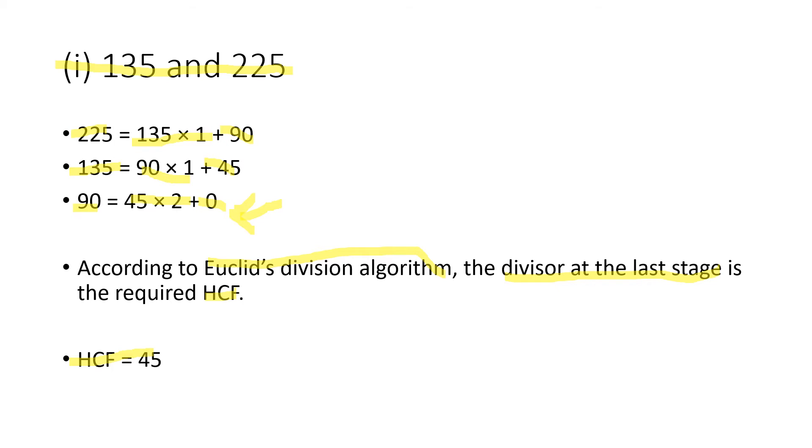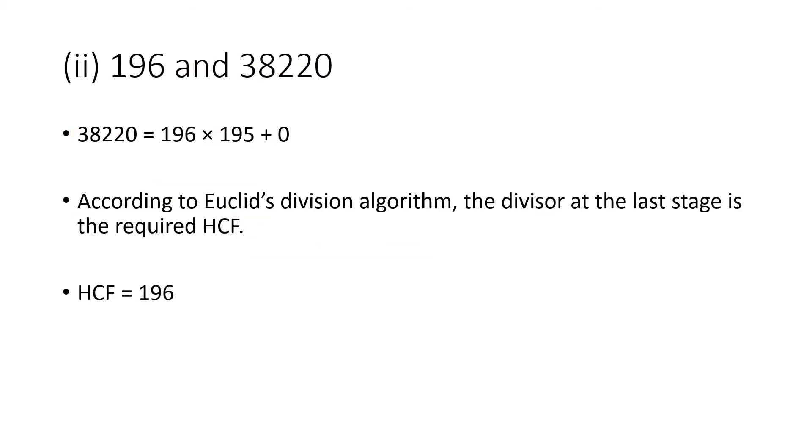Moving forward, we have to find the HCF of 196 and 38,220. So 38,220 equals 196 multiplied by 195 plus 0.